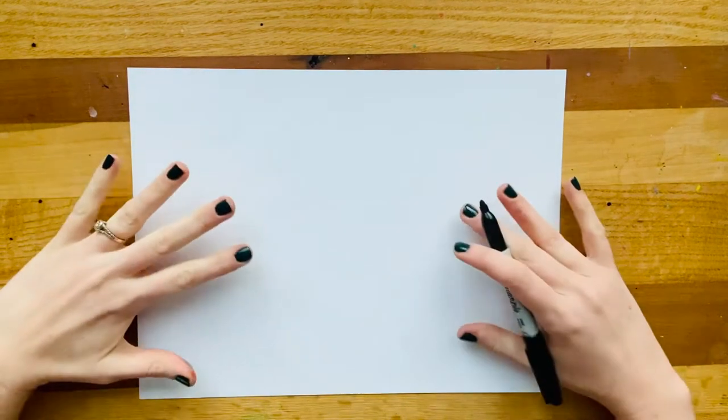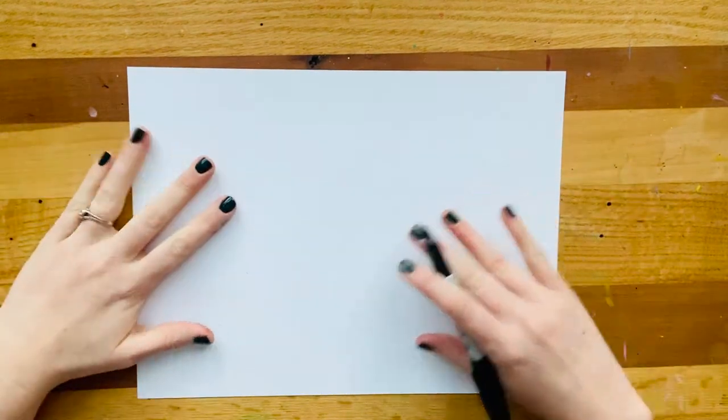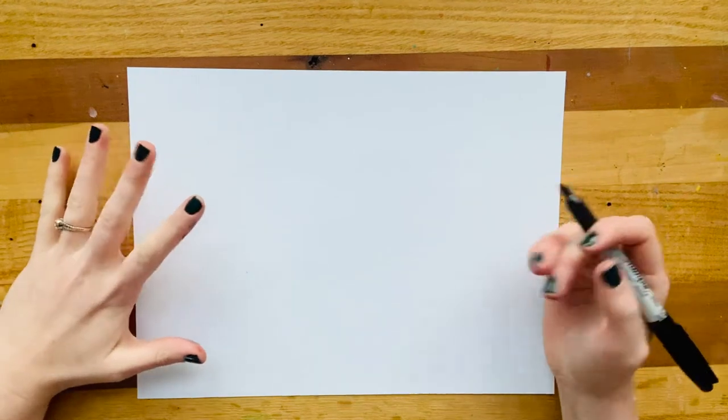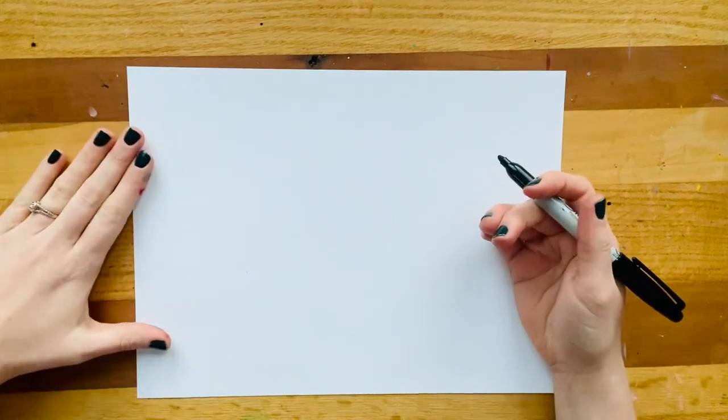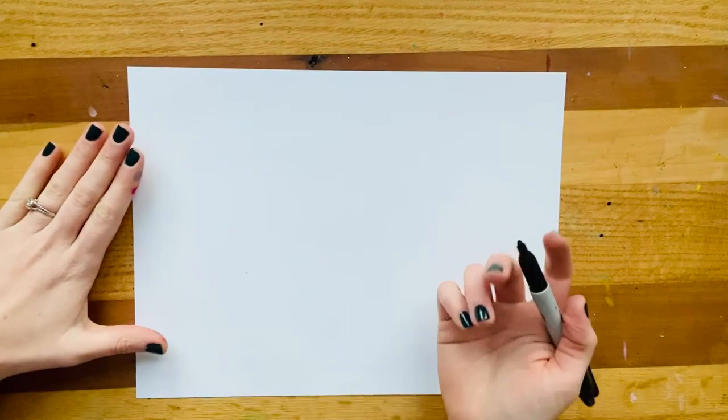We're going to start by creating a confidence building drawing where we get to draw the shapes together. But of course, as always, you can change or edit the designs to make it something that you feel really proud of. So to create our winter mittens, we are going to start with a simple outline of an actual mitten.